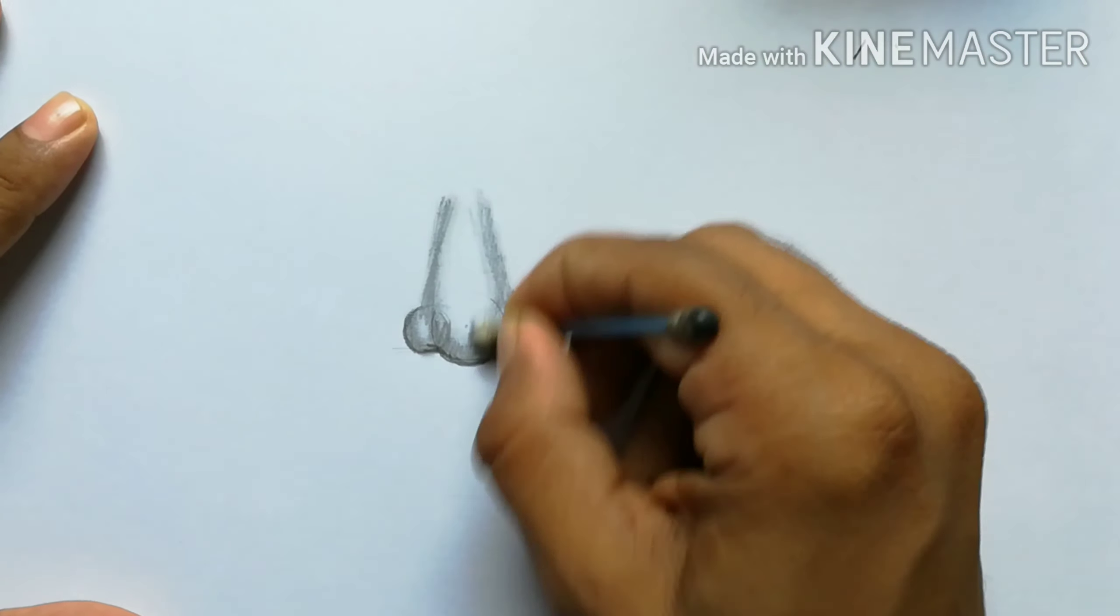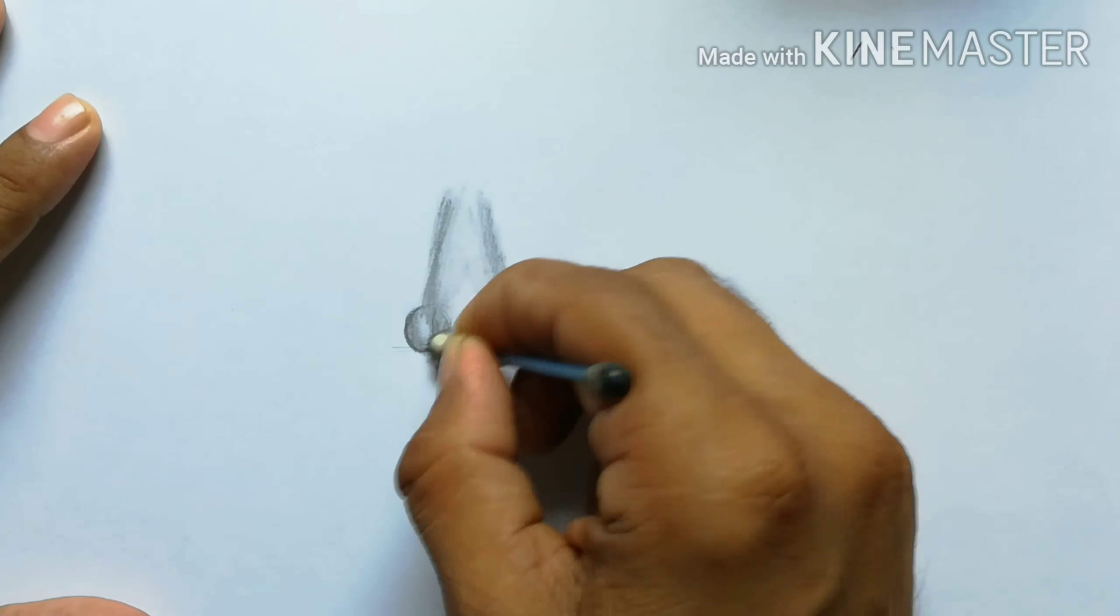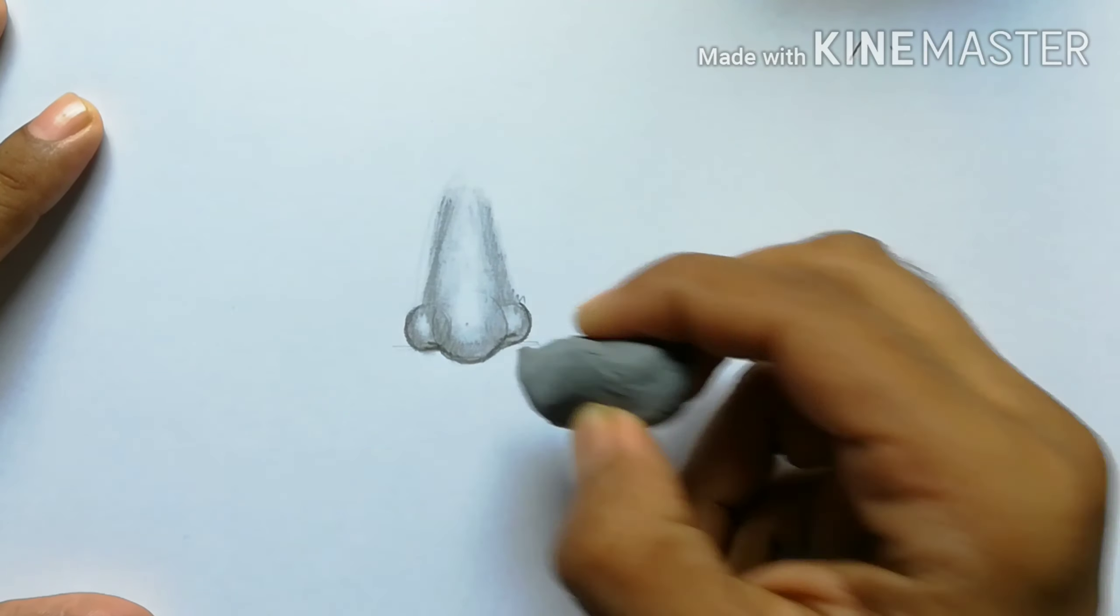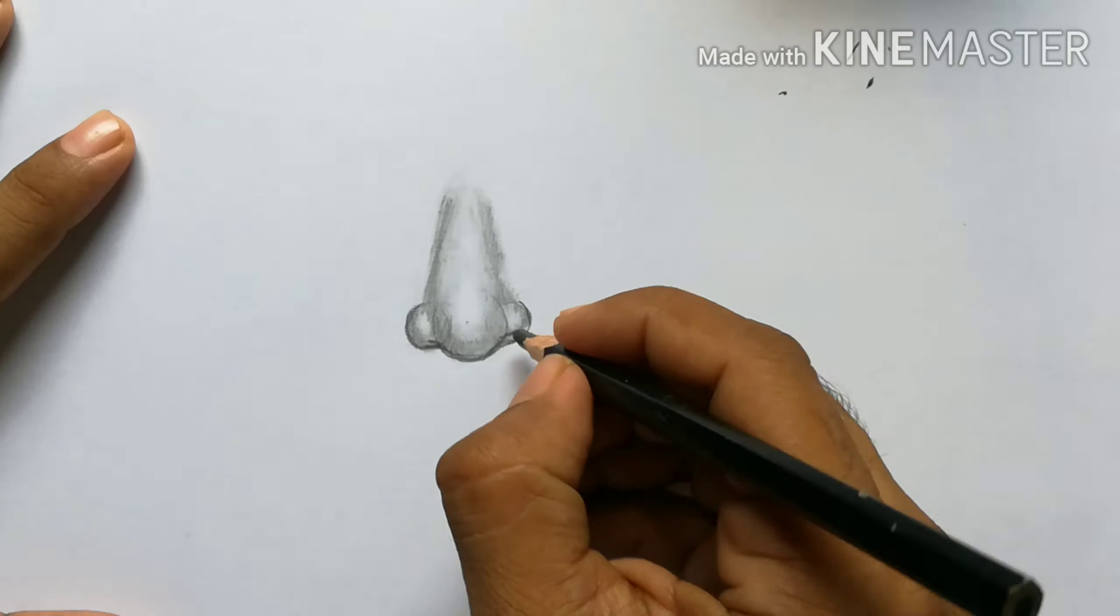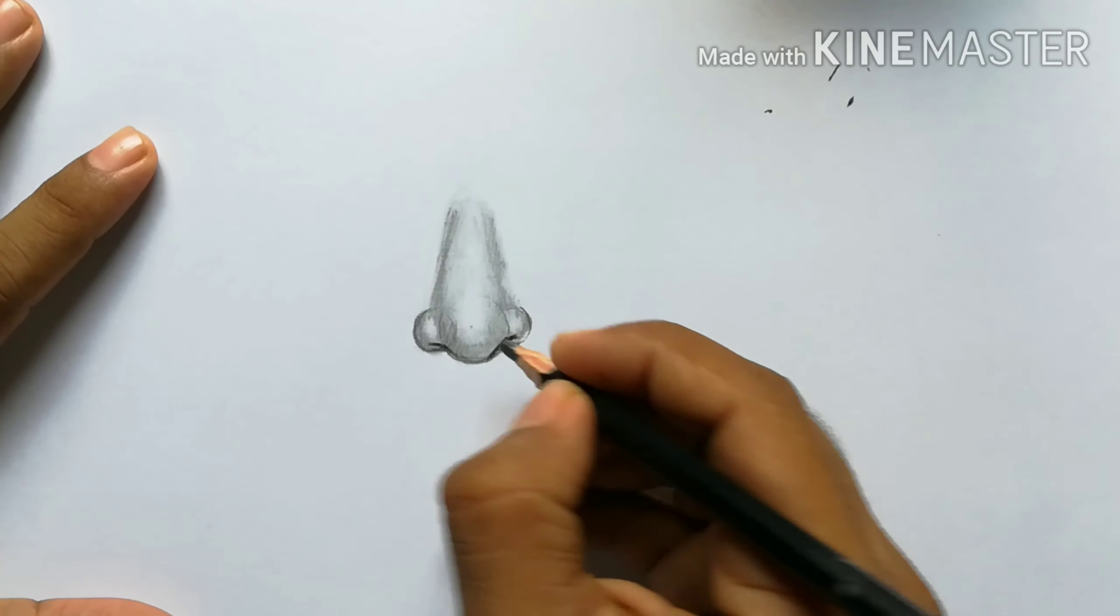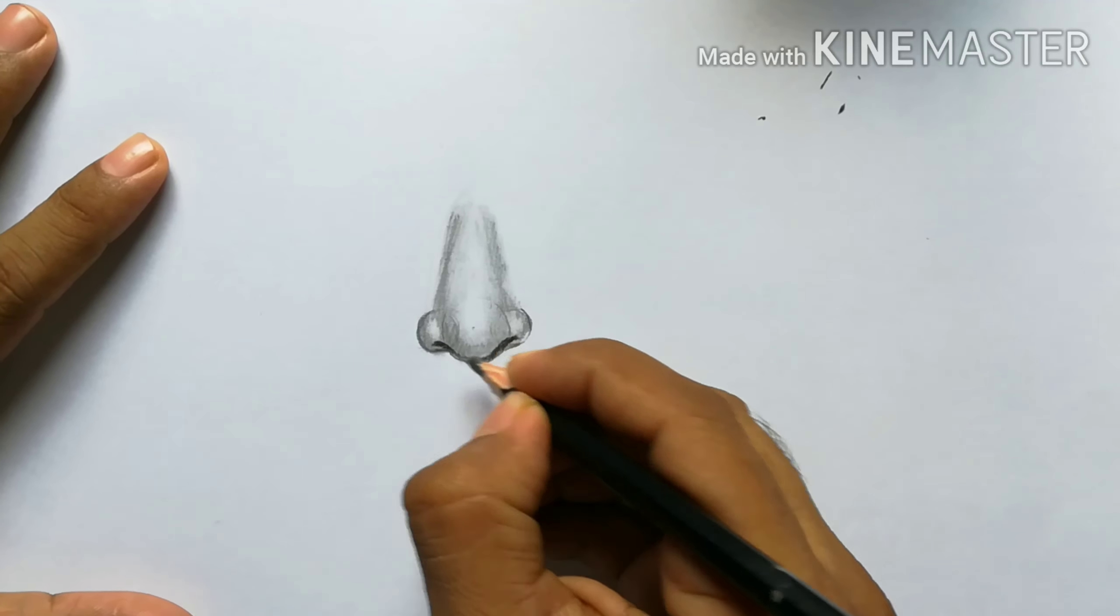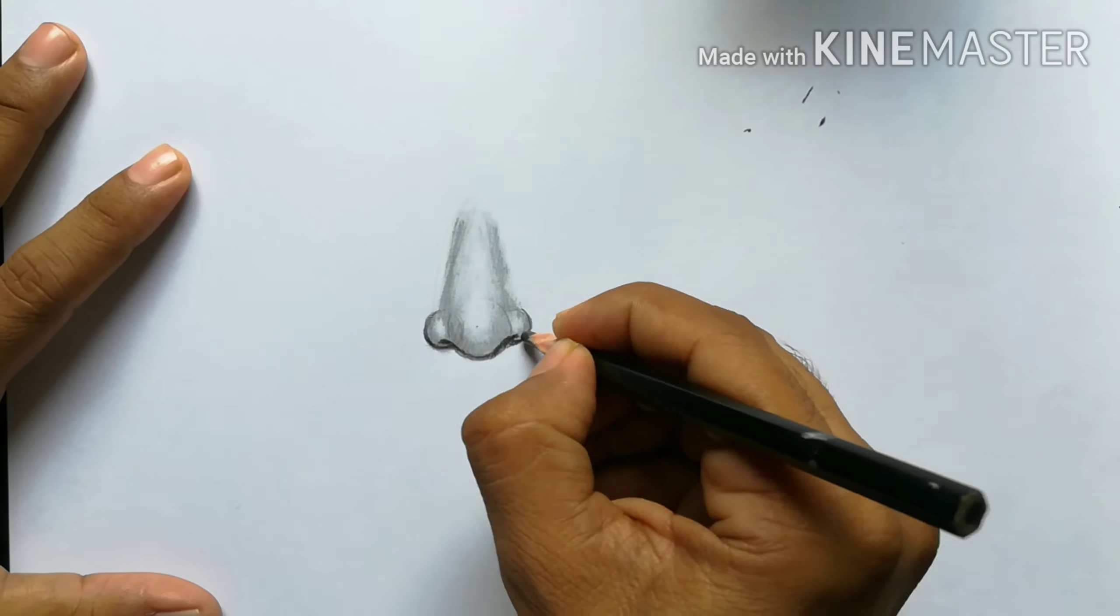But from this video you can know exactly where to put the darker and the lighter shades. This nose is a normal one, neither sharper nor flatter. So next we're going to draw a flatter nose.